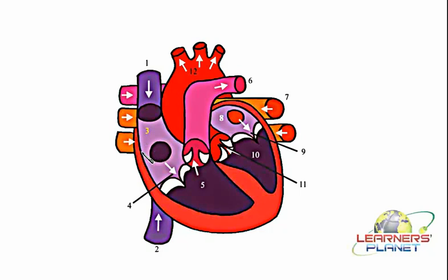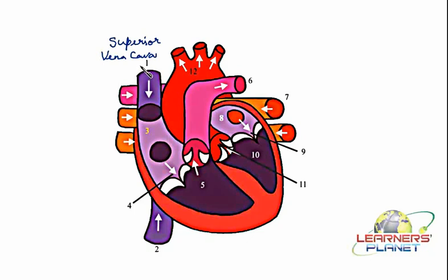As we are saying, the heart is involved in the collection of deoxygenated blood from the body. So if it is collecting the blood, definitely there must be some vessel type structure which is collecting it. In this human heart, that particular function is performed by the structure called the vena cava. Now there are two different types of vena cava. The one which is known as the superior vena cava — number one, what is written here — should be labeled as the superior vena cava. This superior vena cava is actually helping in collecting the deoxygenated blood from the upper parts of the body, that means from the cephalic region or from the head side or towards the anterior side of the body.